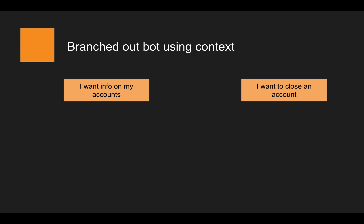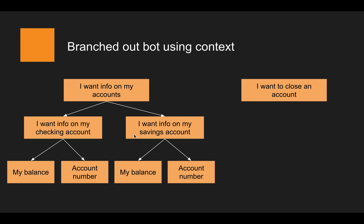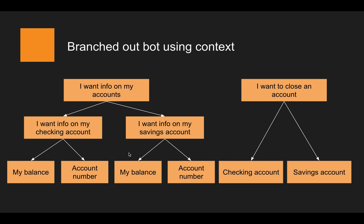The conversation has several levels in this bot. At the first level, we can tell the bot if we want information on our accounts or if we want to close an account. In that branch, the next level is to specify if it's about the checking account or the savings account, and then in the last step we tell the bot if we want to know the balance or the account number. The second branch only has two levels: close account, then either checking or savings.